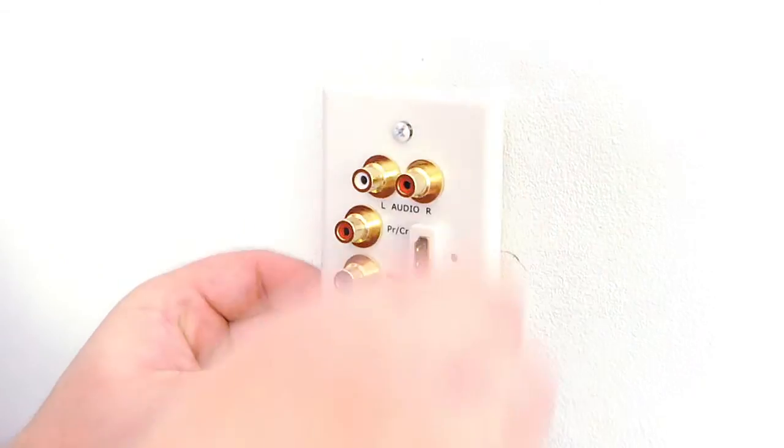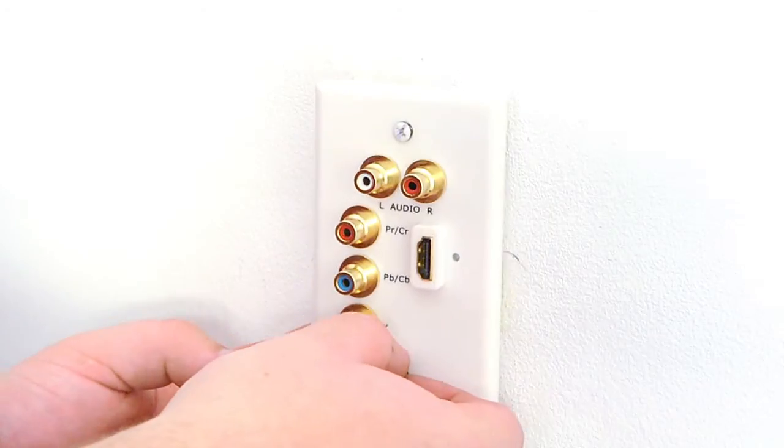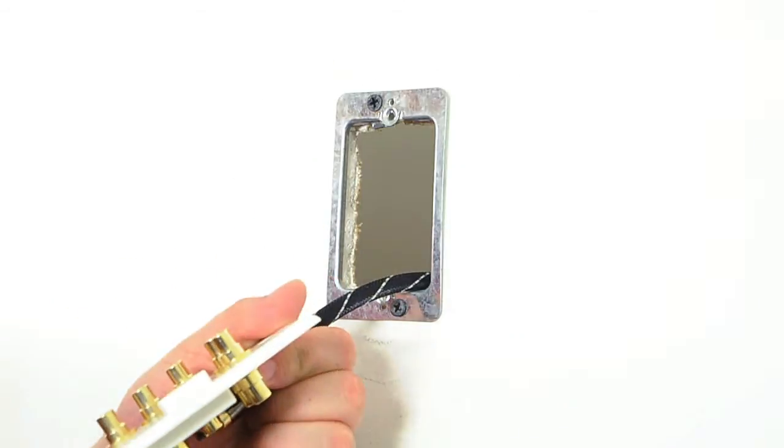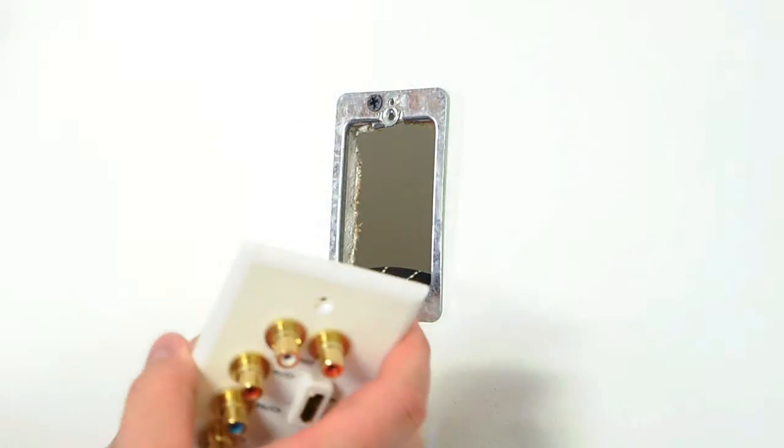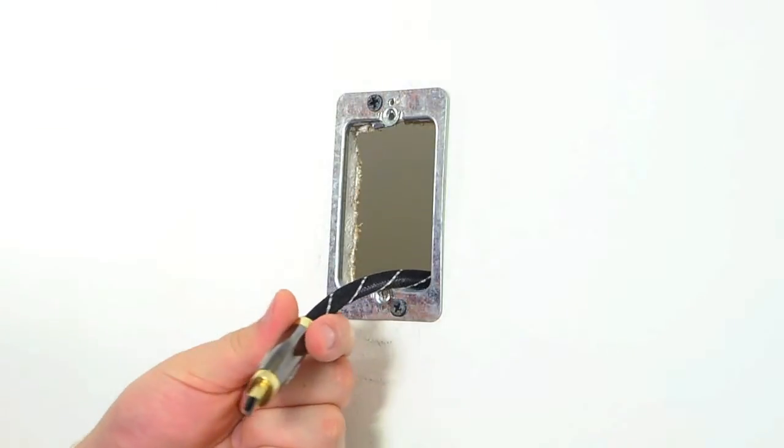This wall plate fits into a standard single-gang box for easy installation. This wall plate can also be installed using a mounting plate, which eliminates the need for a box.